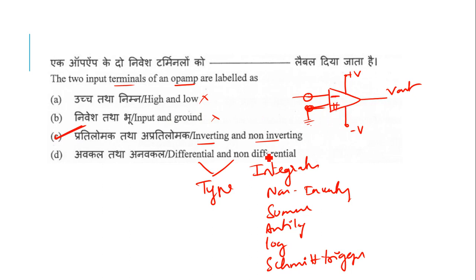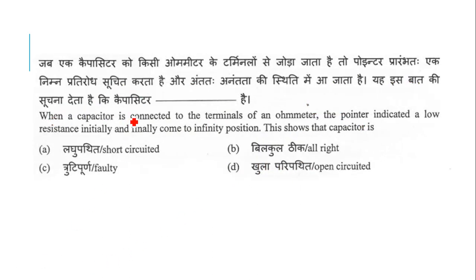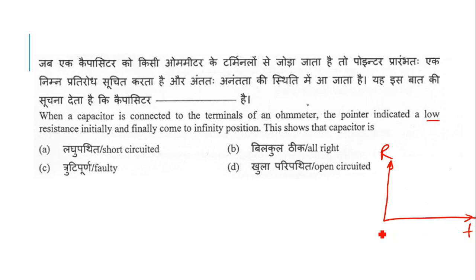When a capacitor is connected to the terminals of an ohmmeter, the pointer indicates a low resistance initially and finally comes to the infinity position. On a resistance-versus-time graph, at time zero the resistance starts low — around 5 or 10 ohms — and then as time increases, the pointer moves toward the infinite position.